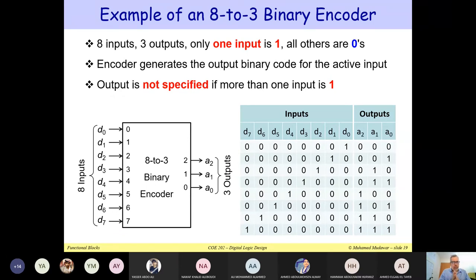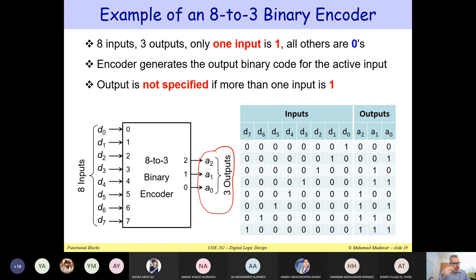Here's an example of an 8-to-3 binary encoder. We have 8 inputs numbered from 0 to 7, called D0 up to D7, and there are only 3 outputs: A2, A1, and A0. The output is a binary code that indicates which input is a one. For example, if D0 is equal to one, then you get the output 0, 0, 0 in binary, indicating that input 0 is a one.